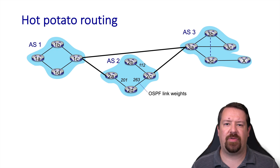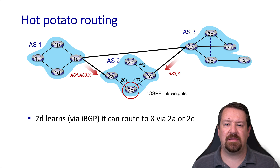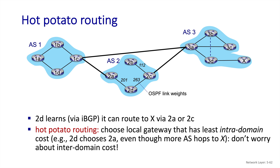This brings us to the issue of hot potato routing. In this example, in AS2 we're showing OSPF link weights. AS2 can reach prefix X through either AS1 or AS3, and from a big-picture view the shorter path is through AS3 directly. However, since OSPF makes a performance decision based on link weights, it will choose router A2 to get traffic to destination X, because OSPF has no knowledge of inter-AS path lengths. This highlights the importance of considering the relationship between inter-AS and intra-AS routing protocols and their effect on global routing optimization.